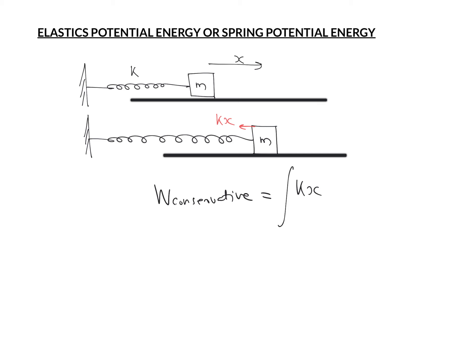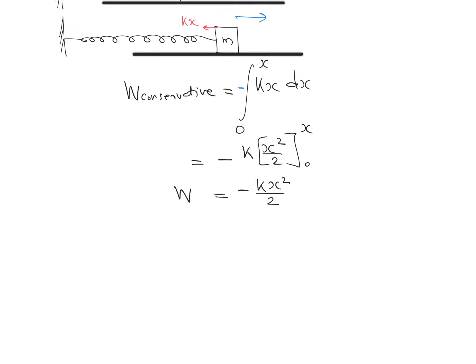We need to use the equation ∫F dx for the calculation of work done. Displacing the object by distance x, we put the limit from 0 to x. The object displaces towards the right and the restoring force acts towards the left, so work done is negative. We write: work done = −k × ∫₀ˣ x dx = −k × (x²/2). So work done by conservative force = −½kx².